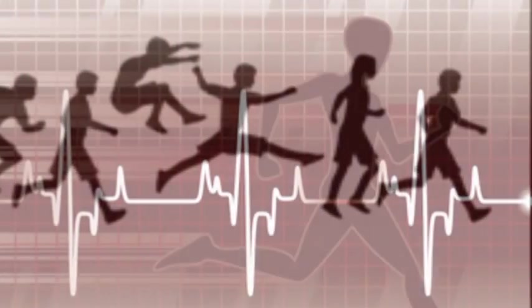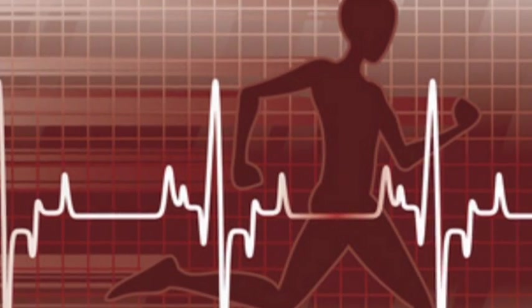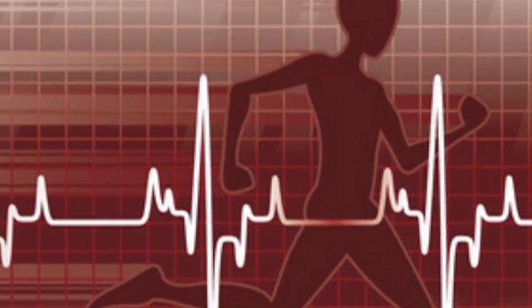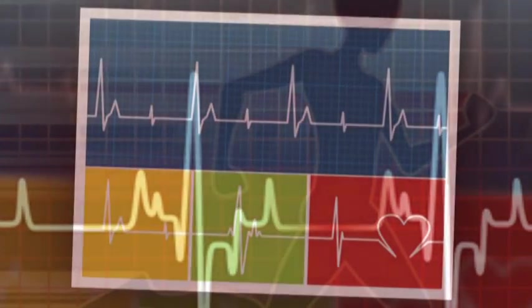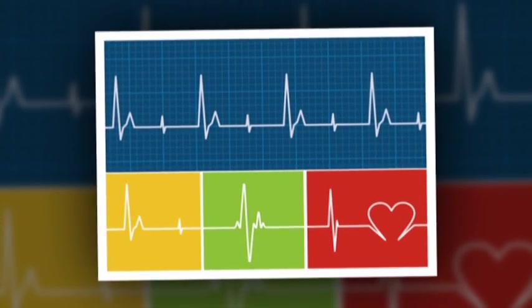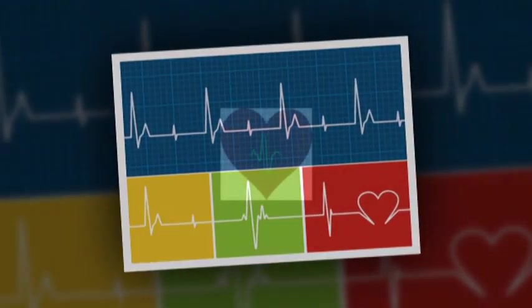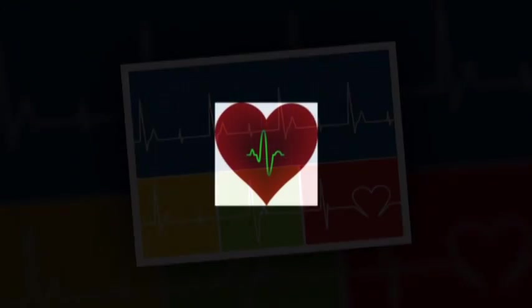For example, many athletes condition themselves by running and doing what we call aerobic exercise. And over a period of time, two things happen. Your heart rate drops. That's why athletes often have a slower heart rate than many of us. And in addition, the heart gets a little bit larger. The cavity gets a little bit larger.